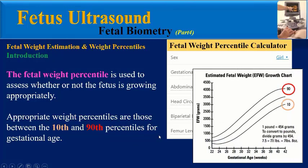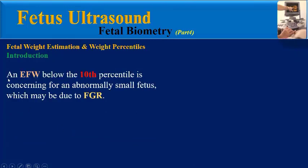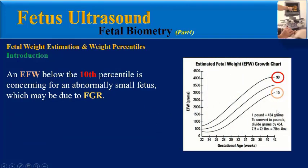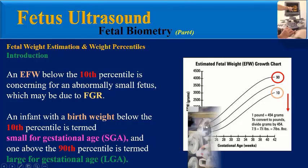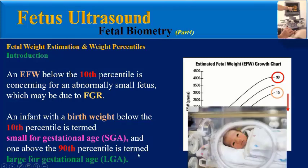Appropriate weight percentiles are those between the 10th and 90th percentiles for gestational age. A weight below the 10th percentile may be due to fetal growth restriction. An infant with a birth weight below the 10th percentile is termed small for gestational age, and above the 90th percentile is termed large for gestational age.